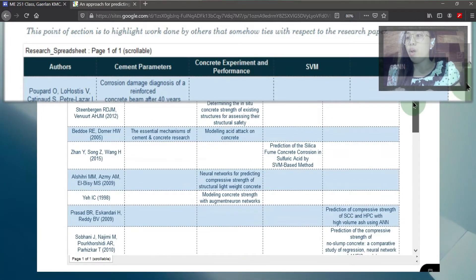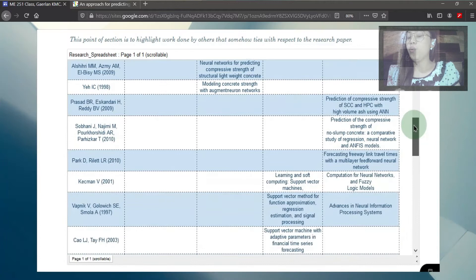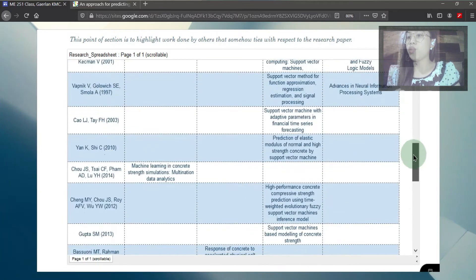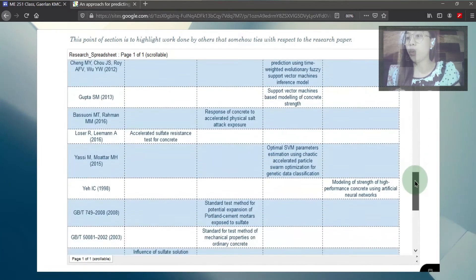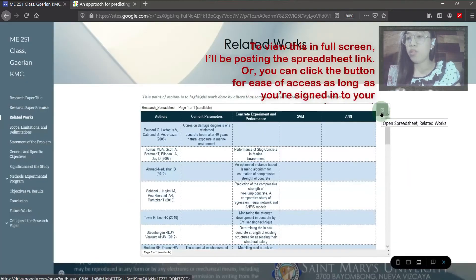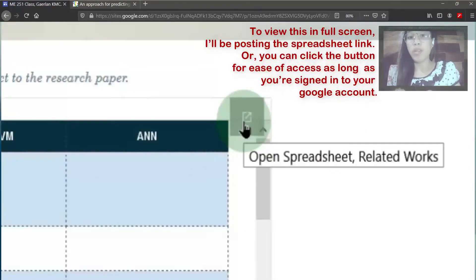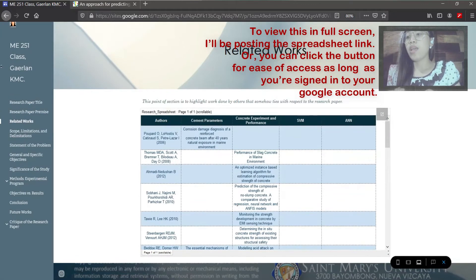We have the different parameters, concrete experiment and performance. The machine learning technique, SVM and ANN, which means Support Vector Machine and Artificial Neural Networks, respectively. To view this in full screen, I'll be posting the spreadsheet link, or you can click the button for the ease of access. You must be signed in to your Google account.